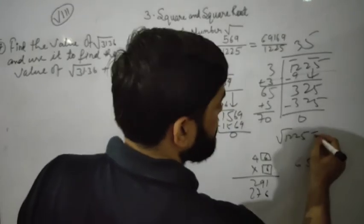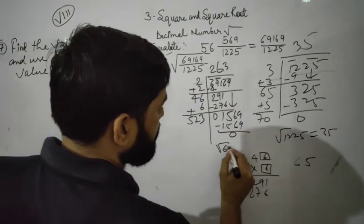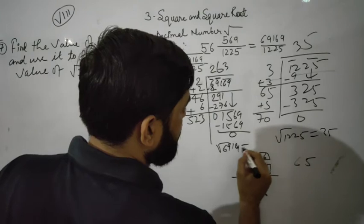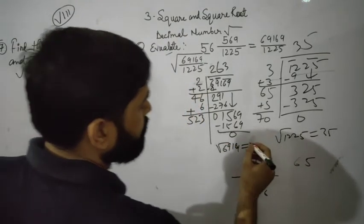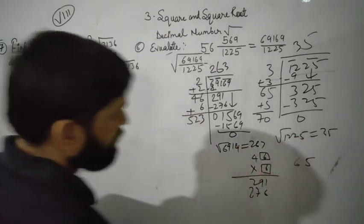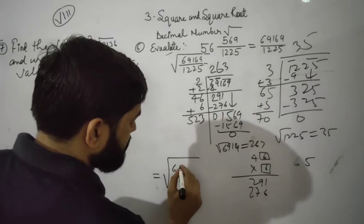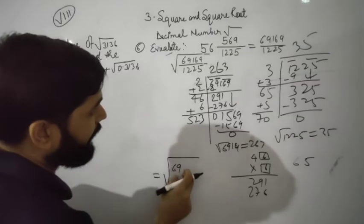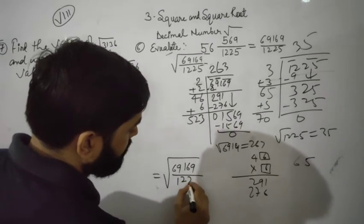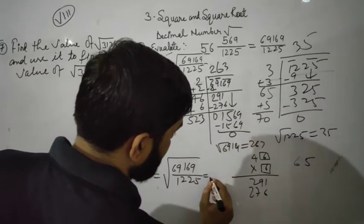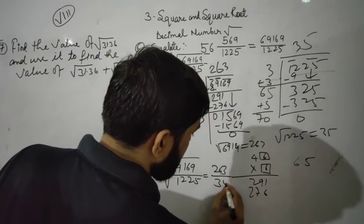The square root of 69169 is 263, and the square root of 1225 is 35. Therefore, √(69169/1225) equals 263/35. This is the answer to this question.